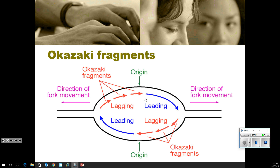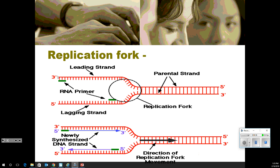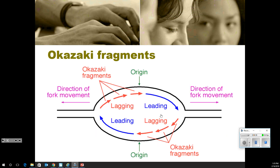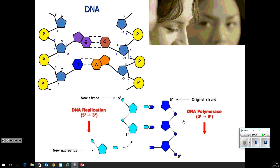So we've got Okazaki fragments — these are the lagging strand pieces. The leading strand goes 3-prime to 5-prime, but if we go 5-prime to 3-prime that gives us our lagging strand, and we get these sections we wouldn't have gotten otherwise. In DNA replication, synthesis goes 5-prime to 3-prime, and DNA polymerase reads 3-prime to 5-prime. Remember, if it ends in a sugar it's the 3-prime end; if it ends in a phosphate, it's the 5-prime end.